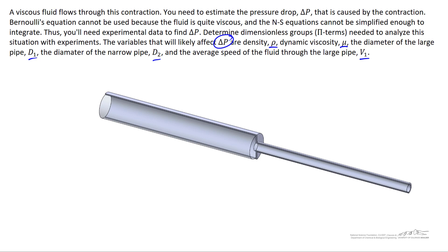Based on these assumptions, the number of pi terms will be equal to K minus R, where K is equal to six — we've got delta P, rho, mu, D1, D2, and V1 — minus the number of dimensions. The dimensions we need are mass, length, and time, so three dimensions. Six minus three is equal to three pi terms. So to answer this question, we're going to come up with three dimensionless groups.